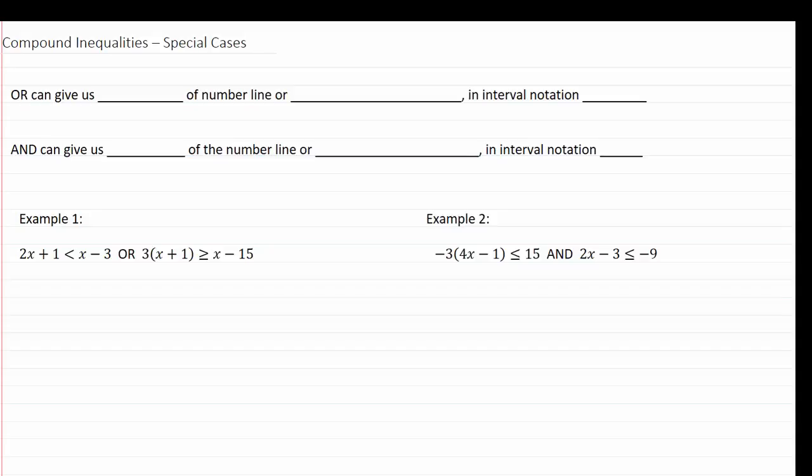Compound inequalities, special cases. OR can give us all of a number line, or in other words all real numbers. In interval notation this would look like from negative infinity to infinity.